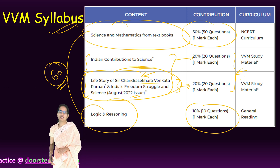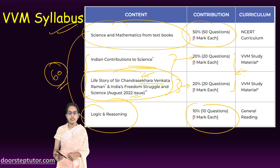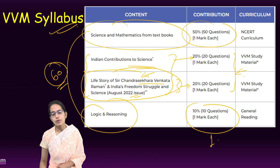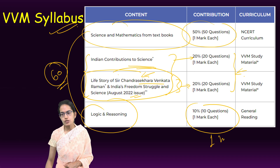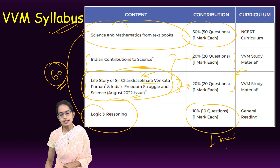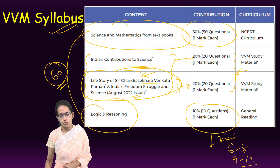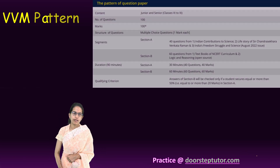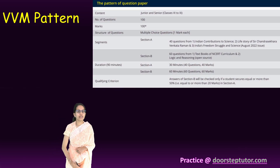The whole examination is one hour 30 minutes, 100 questions, one mark each. There are two categories: the junior group for classes 6 to 8, and the senior group for classes 9 to 12.